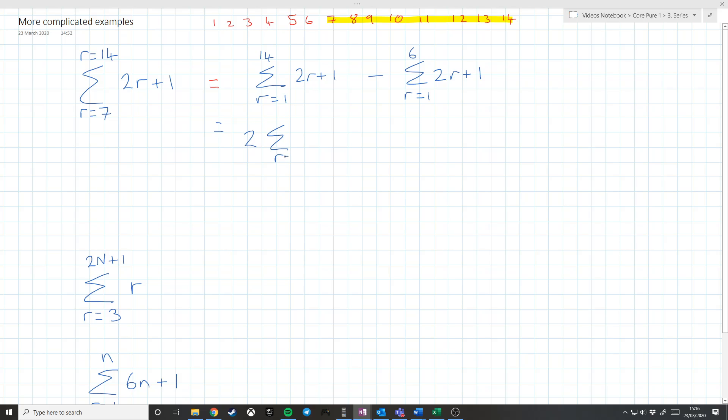Which is equal to, I'm going to definitely need a bit more space here, 2 times the sum from r equals 1 to 14 of r plus the sum from r equals 1 to 14 of 1, subtract. And I'm going to be super careful here. 2 times the sum from r equals 1 to 6 of r plus 1 times the sum from r equals 1 to 6 of 1, which is equal to 2 times, in brackets, 14 over 2, 14 plus 1 plus, this is just n, so it's 14. 14 minus, close bracket, 2, open brackets, 6 over 2 times 6 plus 1 plus 6.